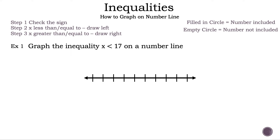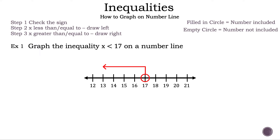Let's get started. We already have our number line. Let's add some numbers — just make sure 17 is on there somewhere. Now we need to circle 17. Are we going to have a filled-in circle or an empty circle? That's right, an empty circle, because we only have less than. Since x is on the left side and we have less than, we draw our arrow to the left.